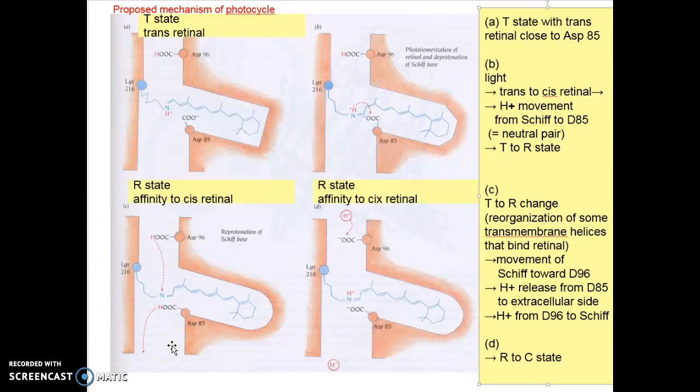Such a conformational change involves a reorganization of some of the transmembrane helices that bind retinal. As a result the Schiff base is moved from the extracellular part of the channel to the cytoplasmic part, away from aspartic acid 85 towards aspartic acid 96. Aspartic acid 95 then delivers a proton through the hydrophilic part of the channel to the extracellular space.